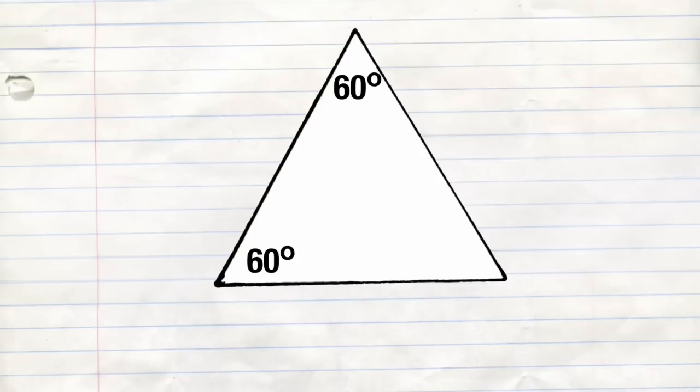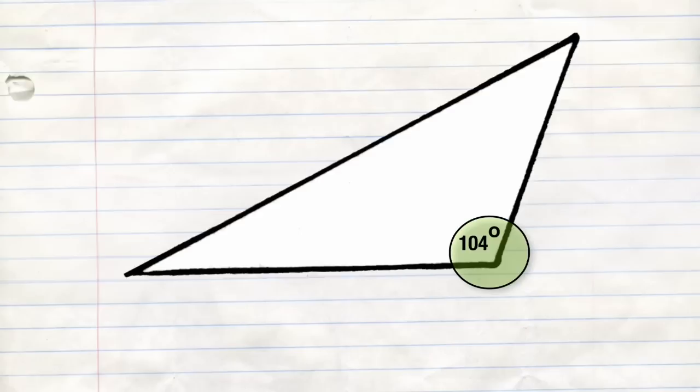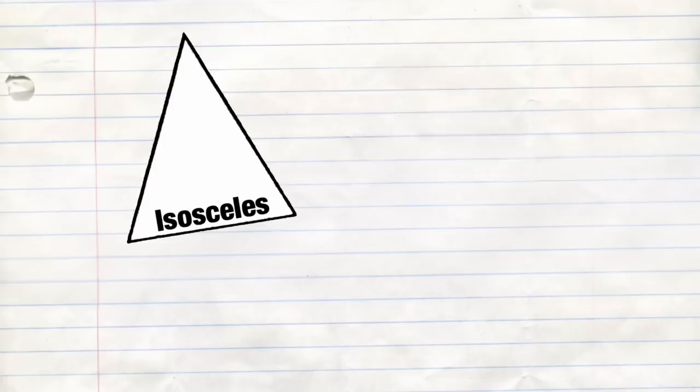If angles are 89 or less, then acute is what it is. If just one is 91 or greater, it's obtuse. If it's 90, it's right — you choose.